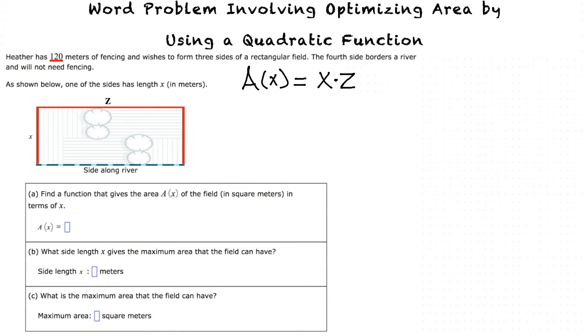We were given that there is 120 meters of fencing available and it's only covering two sides and one length, giving us the equation 2x plus z equals 120. This can also be read as two widths and one length are equal to 120 meters of fencing.